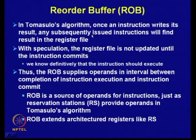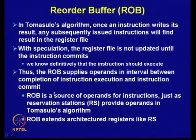In Tomasulo's algorithm, once an instruction writes its result, subsequently issued instructions find the result in the register file. With speculation, the register file is not updated until the instruction commits. The ROB supplies operands in the interval between completion of instruction execution and instruction commit — the ROB is the source of operands for instructions, just as reservation stations were before.